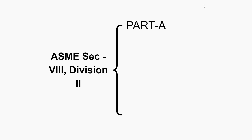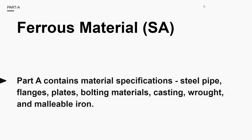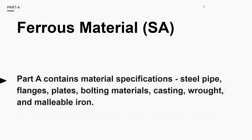It is divided into four parts; we will see each part individually. In Part A, we deal with only ferrous material. It contains material specifications for steel pipe, flanges, plates, bolting materials, casting, rod, and malleable iron.